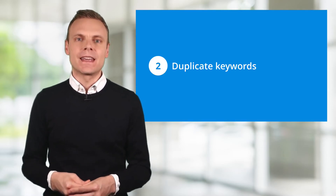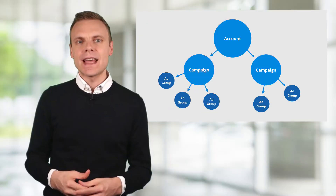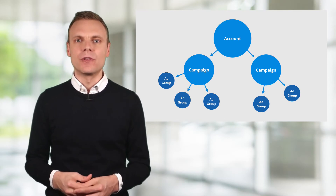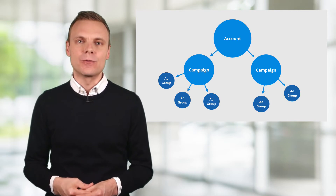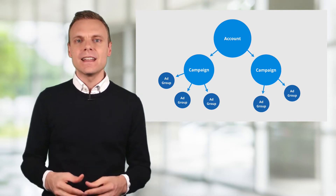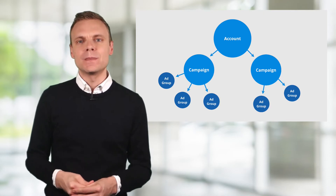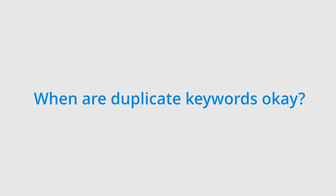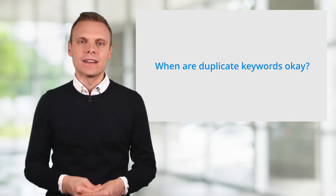Mistake number 2 is duplicate keywords. If you have a keyword in multiple ad groups, then you might be increasing the amount you spend. For example, if you have a keyword in one ad group with a bid of $2 and that keyword is duplicated in another ad group with a bid of $4, then it's likely that the higher bid will be used to display your ads, meaning you could be spending more than you realise on clicks. There are times when duplicating a keyword is fine — for example, if it's in a campaign using different geographic targets, since the keywords won't be competing against one another.